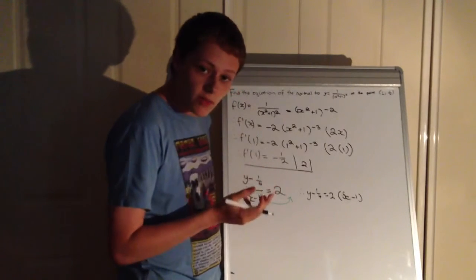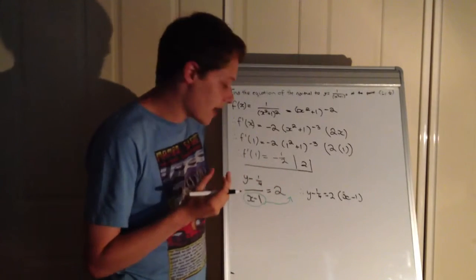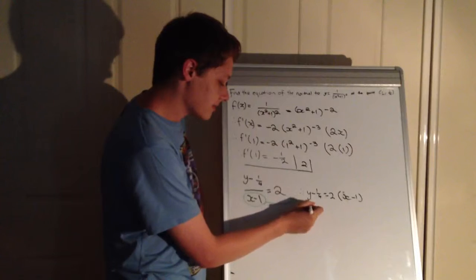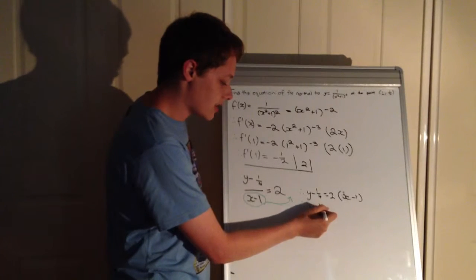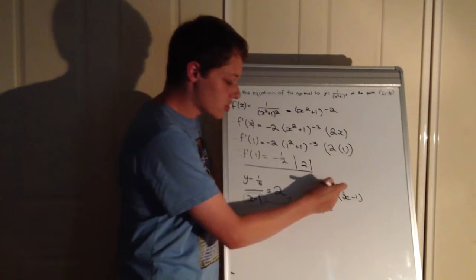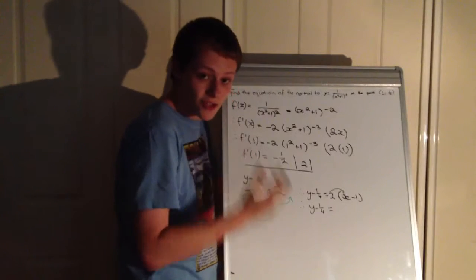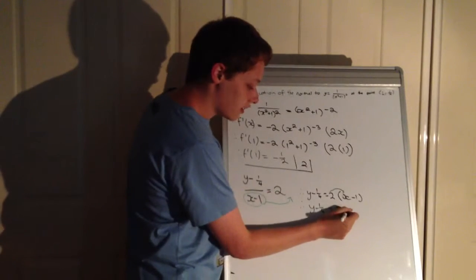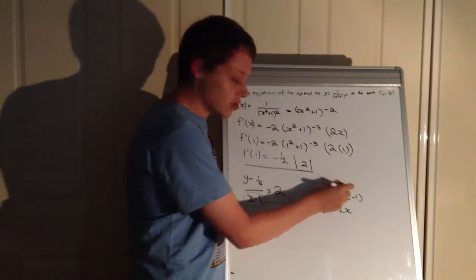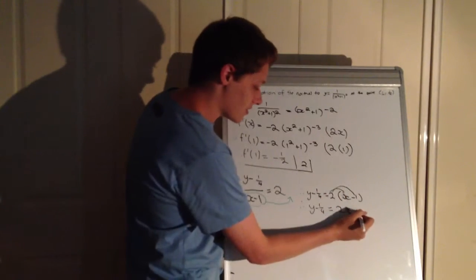Okay, nice. So now what do we do? We need to expand the equation. In order to expand, simply (y - 1/4), and it will be 2 times x using the distributive law, and then 2 multiplied by -1, which is -2.